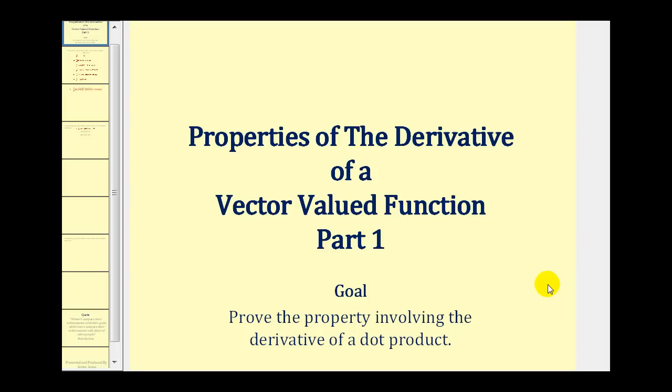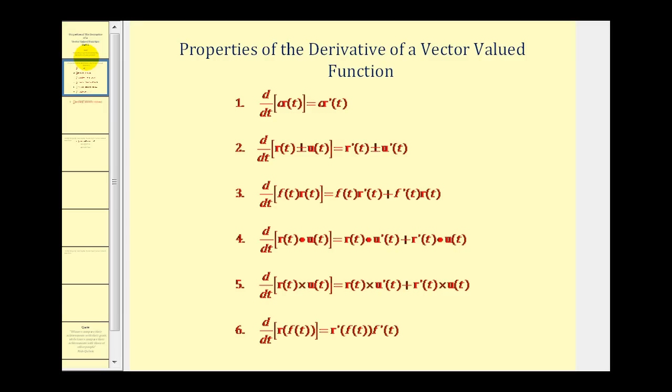Welcome to our review of the properties of the derivative of vector valued functions, part one. In this video we'll take a look at proving the property involving the derivative of a dot product. Here are the six properties of the derivative of a vector valued function we're going to take a look at. These will look very familiar to some of the properties we reviewed when finding derivatives of basic functions.